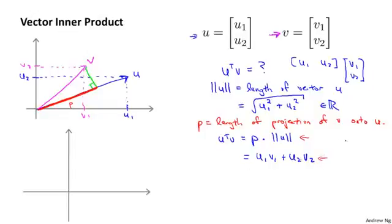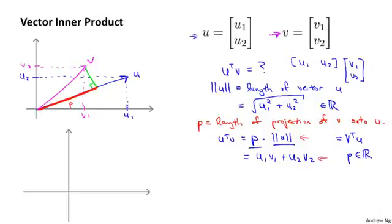U transpose v is also equal to v transpose u. So if you were to do the same process in reverse — instead of projecting v onto u, you project u onto v — you would get the same number. To clarify: the norm of u is a real number, and p is also a real number. So u transpose v is just the regular multiplication of p times the norm of u.